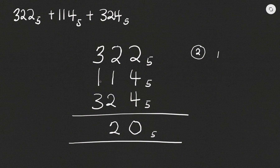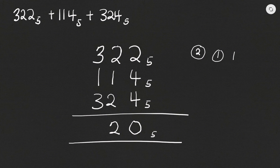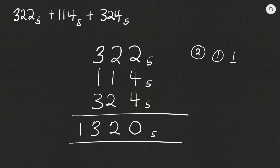Moving on to the next digit: three plus one is four, plus three is seven, plus the one that we carried makes eight. Five going into eight once, left with three, so I write down three and carry one. Since there is no number to add in front, I write that one in front. So my answer is 1320 base five.